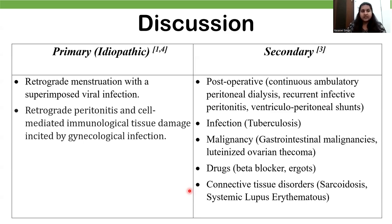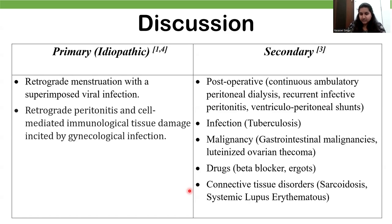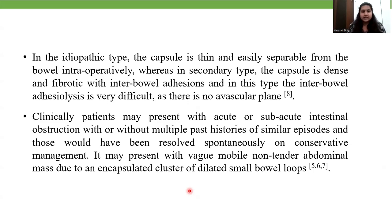Discussion: Abdominal cocoon can be either primary or secondary. Primary is idiopathic and can be due to retrograde menstruation with superimposed viral infection or retrograde peritonitis. Secondary causes include post-operative causes, infection, malignancy, drugs, connective tissue disorders, etc. In the idiopathic type, the capsule is thin and easily separable. In the secondary type, the capsule is dense and fibrotic with interloop adhesions.